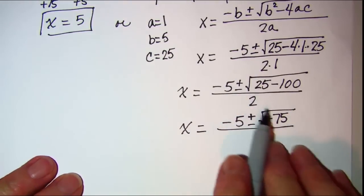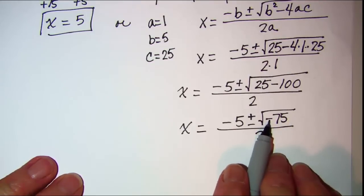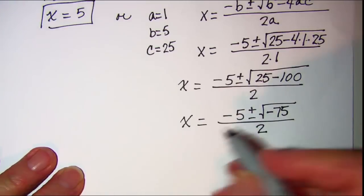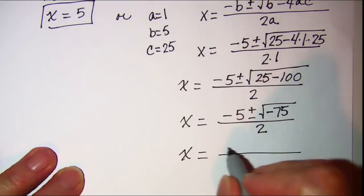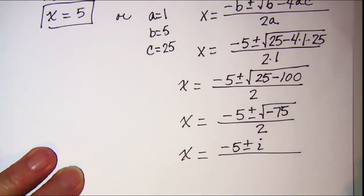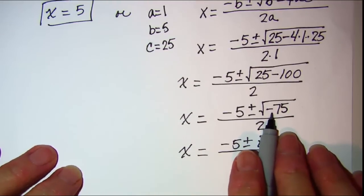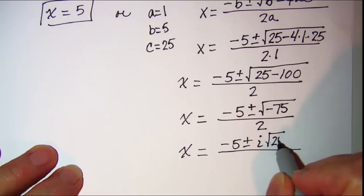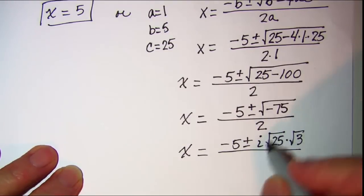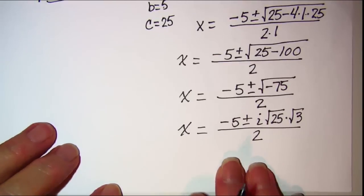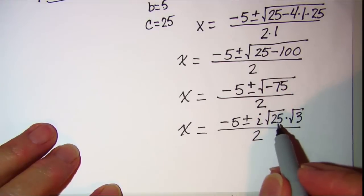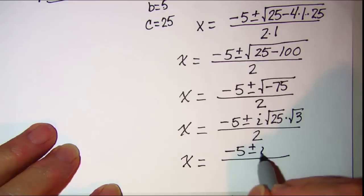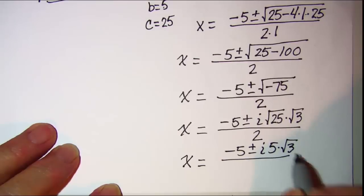We can see a few things to simplify. The negative under the radical means we have an imaginary number, so we bring it out and write i, since the square root of negative 1 is defined as i. We also break 75 into the square root of 25 times the square root of 3. The square root of 25 is 5, so x equals negative 5 plus or minus 5i times the square root of 3, all over 2.